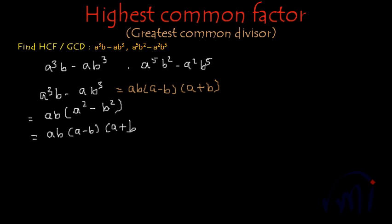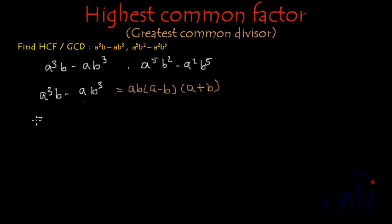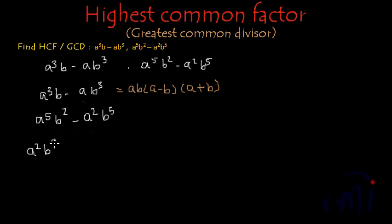Now let's take the second expression and find its factors. The second expression is a to the power 5 b square minus a square b to the power 5. From these two terms we can take a square b square common, and inside the bracket we will have a cube minus b cube.